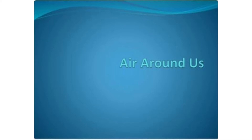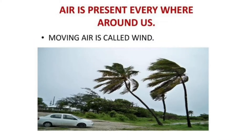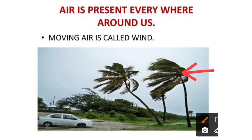Now let us study some more topics of this chapter, Air Around Us. Moving air is called wind. You can see here — the direction in which the trees are moving shows that the air is moving in that direction. So this is called wind.